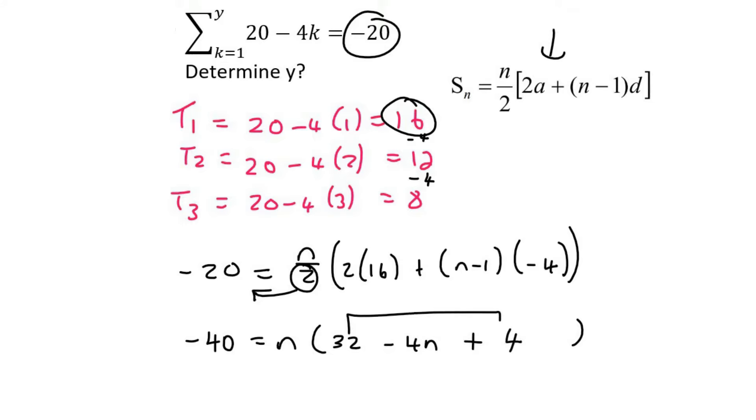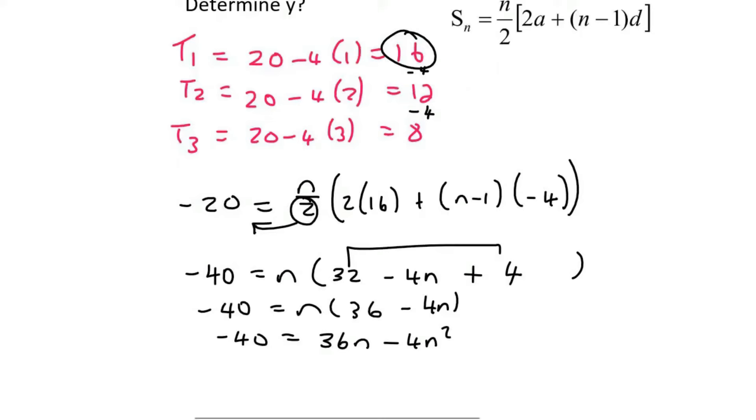Then inside these brackets, it will become 32 minus 4n plus 4. I then put the 32 and the 4 together, which would be 36. Then I just multiply the n into the brackets.